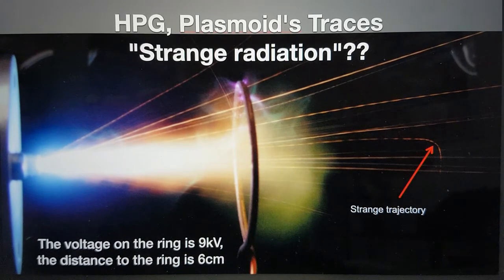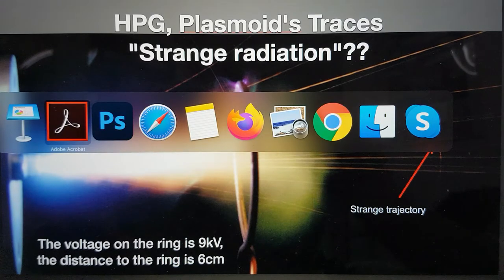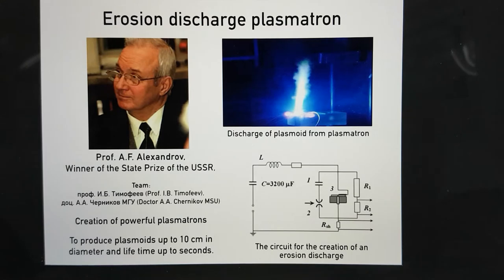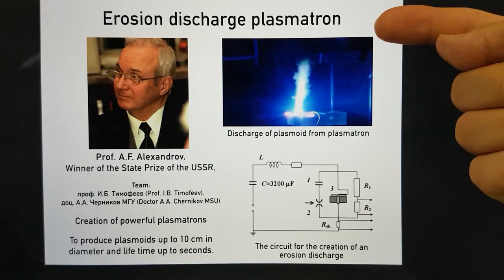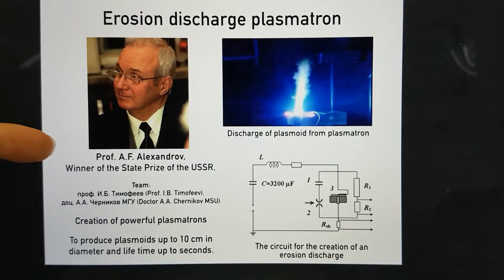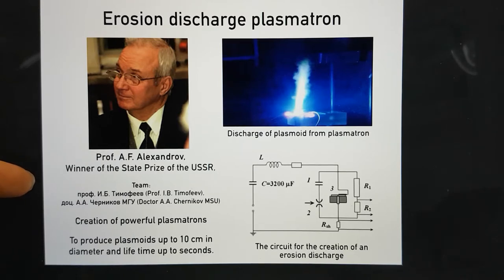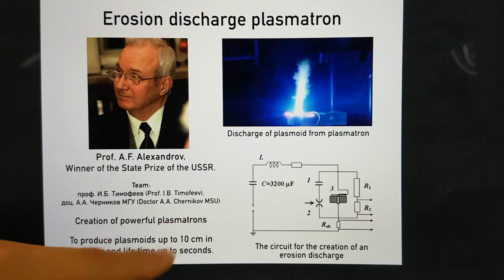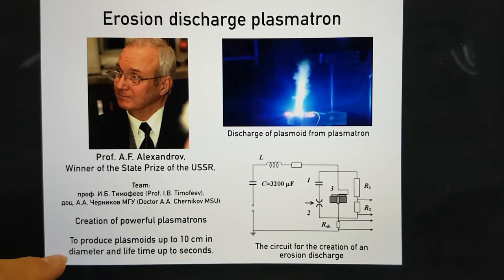I did a little bit of research on your behalf to get you going. First, there is a presentation from around the 28th of May in the monthly end-of-month Dr. Samonsonenko group of Russian researchers. It was a whole presentation on various forms of ball lightning. I've translated a slide from that — it's about erosion discharge plasmatrons. You see one of the same type of devices from the work presented by Klimov. Aleksandrov worked with Klimov, and he won the State Prize of the Soviet Union with a team of Timofiev and Chernikov for the creation of powerful plasmatrons producing plasmoids of up to 10 cm in diameter with a lifetime of up to seconds.